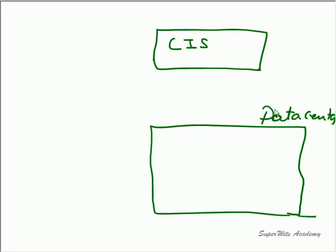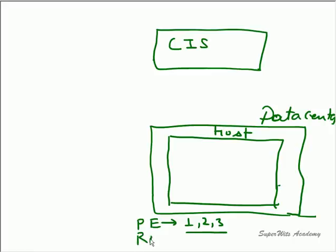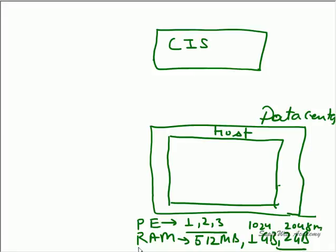The data center must have some characteristics, which you specify in your example. Those characteristics are basically for your hosts. Each data center may have some hosts — for example, in Example 1 you have one host. This host will have some hardware configuration: a number of processing elements (it may be one, two, or three), some RAM (512 MB, 1 GB, 2 GB — specified in MB, so 1024 or 2048), and some bandwidth.